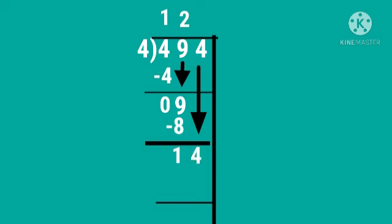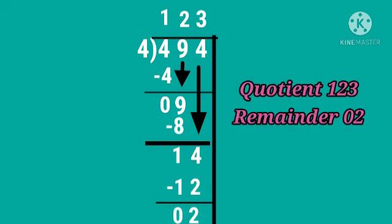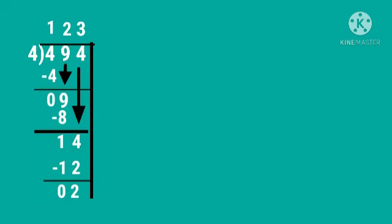Now, bring down 4. So, which number is form here? Yes, 14. 4 threes are 12. 4 fours are 16. So, 16 is greater than 14. So, which number we will take here? Yes, 4 threes are 12. So, write 3 in the units place of the quotient. 14 minus 12 is equal to 2. So, your quotient is 123, remainder is 2.